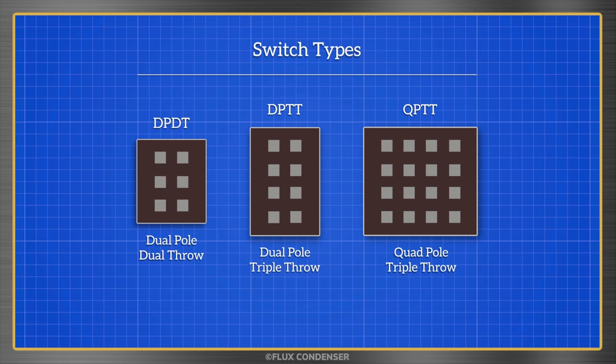Pole refers to how many circuits can be switched. The two dual pole switches have two switchable circuits, and the quad pole has four.